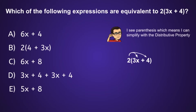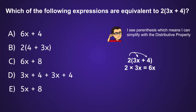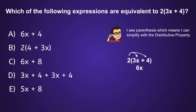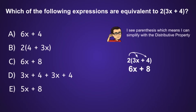First we draw the arrows so we know to multiply that outside number by both of the terms inside the parentheses. Then we follow those arrows: 2 times 3x is equal to 6x. We bring down that plus sign and follow the second arrow — 2 times 4 is equal to 8. So the final simplified expression is 6x plus 8.